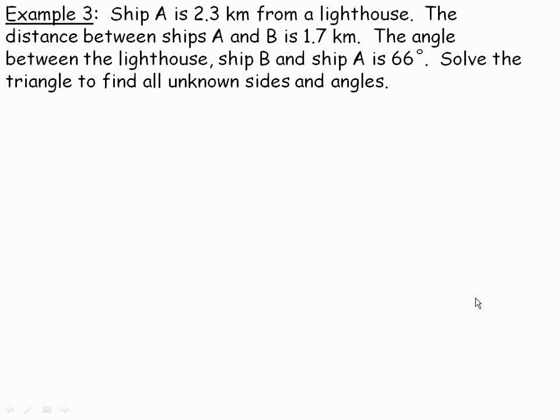One last example on this page. Ship A is 2.3 kilometers from a lighthouse. The distance between it and another ship, we'll call it ship B, is 1.7 kilometers. And the angle between the lighthouse, ship B, and ship A is 66 degrees.